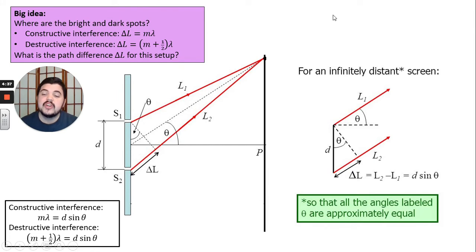Constructive interference occurs when that path difference d sine theta is equal to m times lambda, where m is an integer, 1, 2, 3, 4, 0, negative 1, 2, 3, 4, et cetera. Destructive interference occurs when you have m plus a half lambda is equal to d sine theta. And that's our equation for Young's double slit experiment.